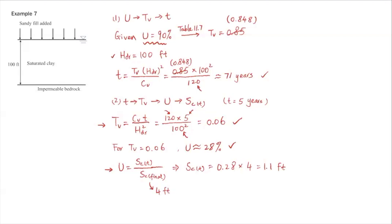The 4 feet is given in the problem statement. Substitute these values—this is basically that capital U and this 4 is sc final—and you'll get a settlement at t of 5 years of 1.1 feet.